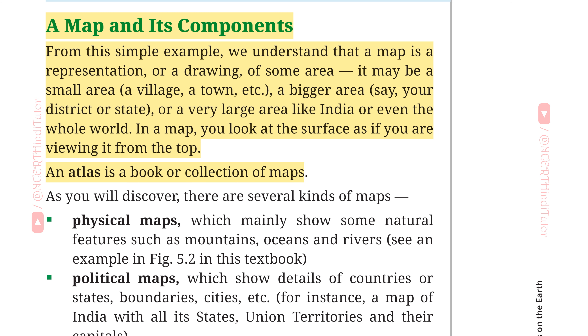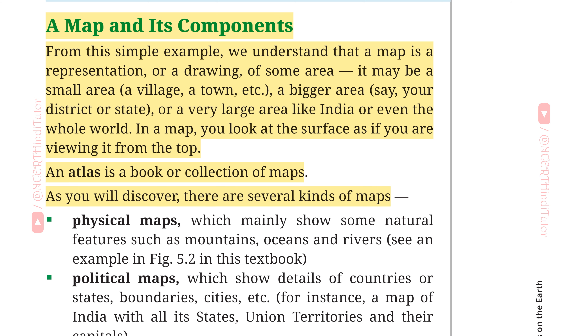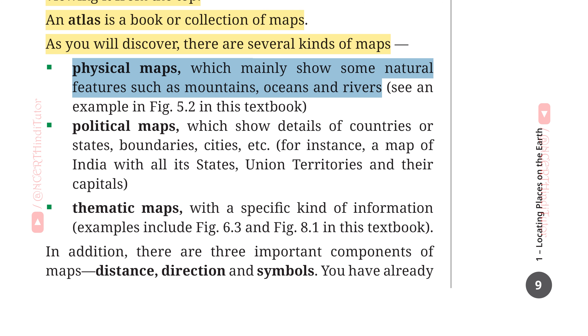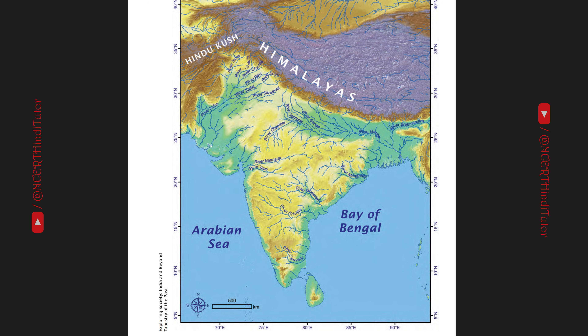An atlas is a book or collection of maps. एक एटलस नक्शों की किताब या संग्रह है। As you will discover, there are several kinds of maps. First, physical maps, which mainly show some natural features such as mountains, oceans and rivers — see an example in figure 5.2 in this textbook. भौतिक नक्शे जो मुख्य रूप से प्राकृतिक विशेषताओं जैसे पर्वत, महासागर और नदियाँ दिखाते हैं।